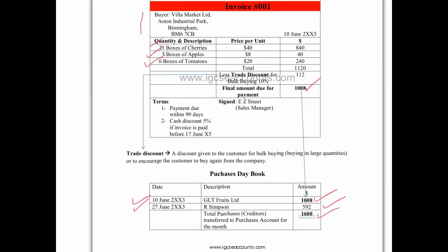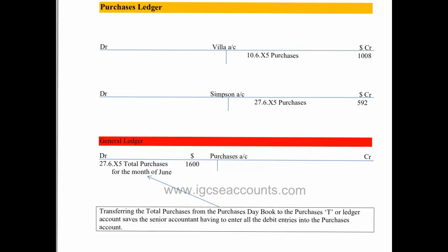It's important to remember the purchases day book is only for creditors of stock or inventory. The total purchases for the month of June was $1,600. That will be entered on the debit side of your purchases or inventory account in the general ledger, which contains all the T accounts except for the creditors and the debtors. In this case the creditors will go into the purchases ledger.